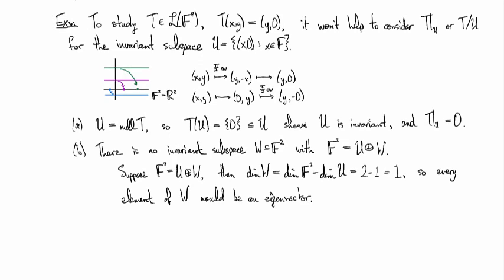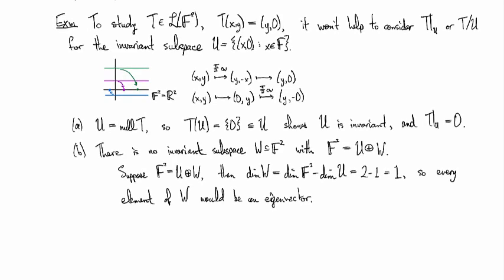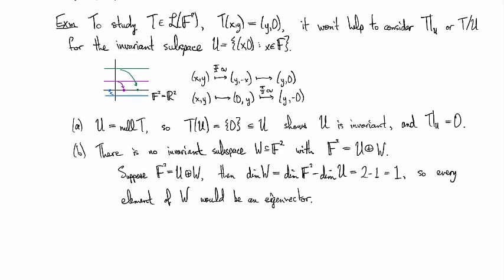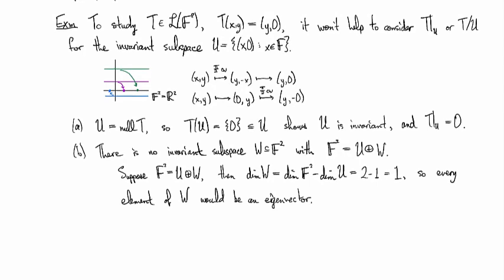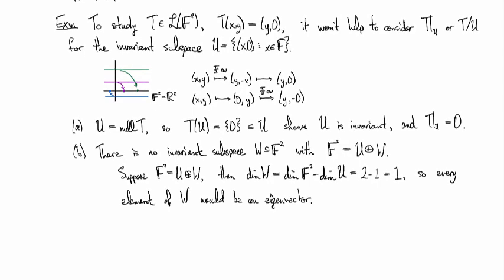But you can see that everything off the axis gets moved into the axis. So it's not possible for there to be an eigenvector unless it's in the axis U.